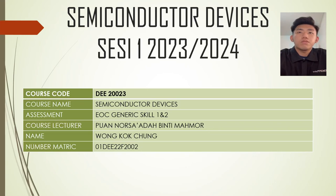Good morning. My name is Wong Gok Chong. My matriculation number is 01DE22F2002. Today is EOC Generate Scale 1 and 2.